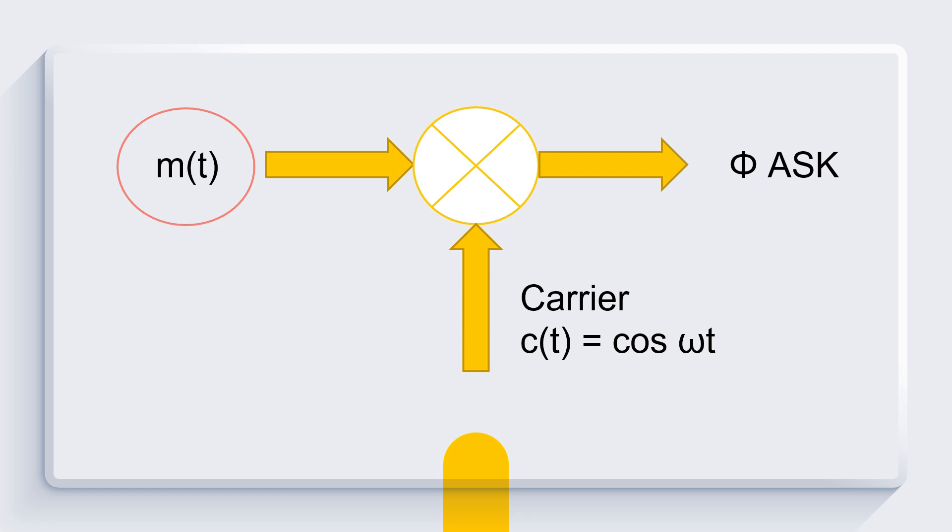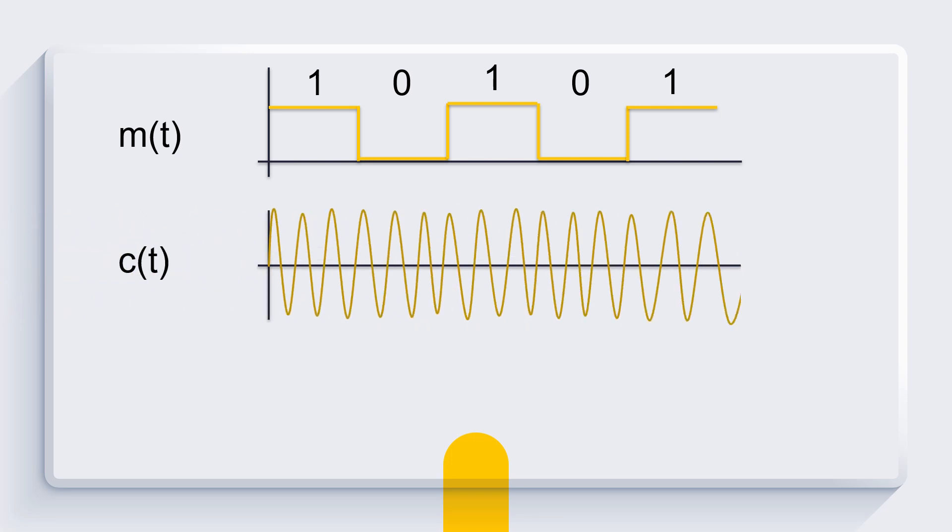For example, m(t) equals 10101. And the value of m(t) will be multiplied into our carrier signal c(t), then it will generate the output amplitude shift keying. To illustrate this, we have m(t) equals 10101 and our carrier signal c(t), then we are able to generate ASK signal as a product of m(t) and c(t).